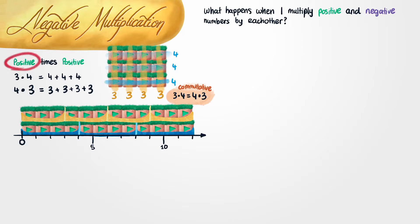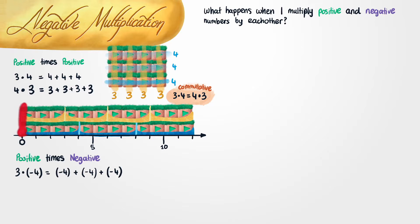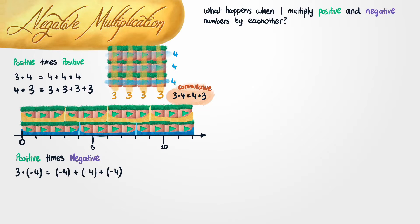Now that we understand how to multiply a positive number by another positive number using repeated addition, it's not going to be very hard to multiply a positive number by a negative number. Before, we said that 3 times 4 is the same as adding 4 to itself 3 times. Well, 3 times minus 4 would just be the same as adding minus 4 to itself 3 times. The number minus 1 is just like 1 but instead of an instruction to move right, it's an instruction to move left. So I'm going to draw another block that's a different colour and points to the left rather than to the right.